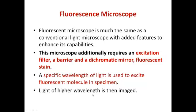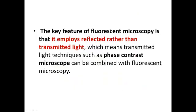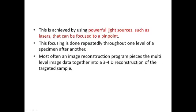This requires a specific kind of lamp that initiates a different kind of wavelength — a light of higher wavelength is imaged. The key feature of fluorescent microscopy is that it employs reflected light rather than transmitted light. This means that transmitted light techniques such as the phase contrast microscope can be combined with fluorescent microscopy.